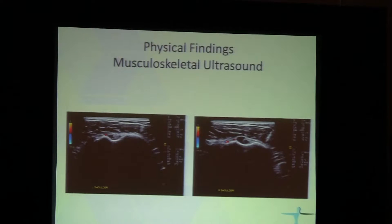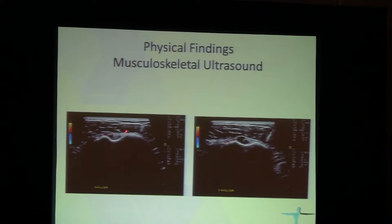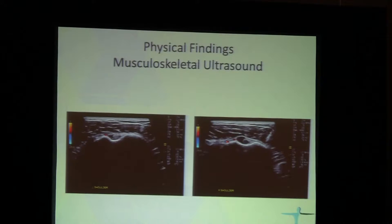Another area where we see cyst formation all the time is the bicipital tendon — specifically the long head of the biceps tendon. This is the bicipital groove, here is a normal-looking tendon, and you can see the cyst right there with some degree of tenosynovitis by color Doppler. Once you see this lesion, you need to think about what kind of infectious process could underlie that cyst formation.